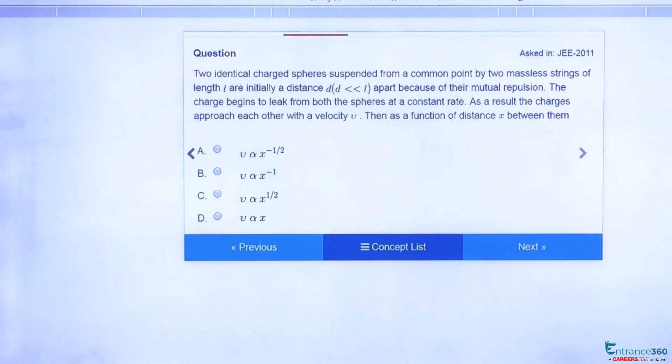Then charges start leaking at a constant rate. As a result, the charges approach each other with a velocity V. Now we have to find velocity V as a function of x, which of the following relation is right.